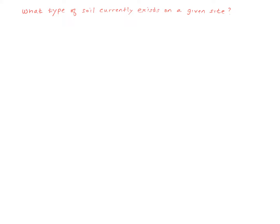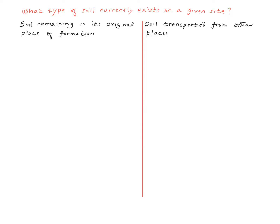The question is: what are residual and transported soils? Let's briefly talk about what type of soil currently exists on a given site. The soil on a given site belongs to either one of two groups — soil remaining in its original place of formation, or soil transported from other places. The former is called residual soil, whereas the latter is called transported soil.